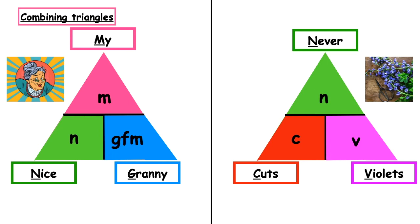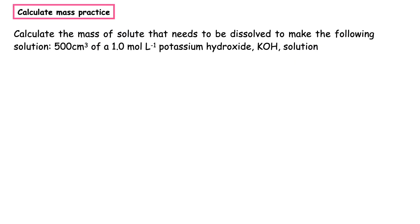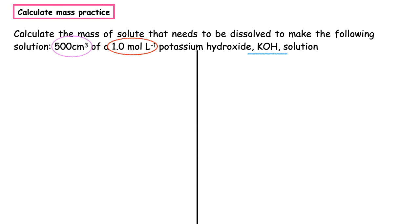This first practice question we are going to be looking at calculating the mass. The question asks: calculate the mass of solute that needs to be dissolved to make the following solution — 500 centimeters cubed of a one mole per liter potassium hydroxide solution, and the formula is given as KOH. When we're given information about both triangles, we split our page in two and draw both triangles out.